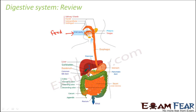From the stomach, the partially digested food passes on to the small intestine. The small intestine receives enzymes from the pancreas as well as bile juice from the liver. All these get mixed up in the small intestine and complete digestion of food takes place, converting all food particles into their simplest absorbable forms. The food then passes on to the jejunum and ileum where absorption takes place with the help of villi.